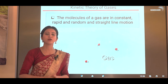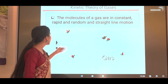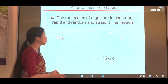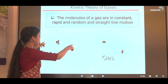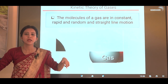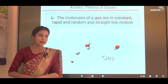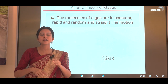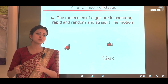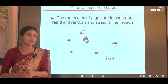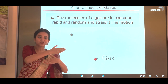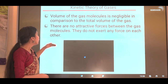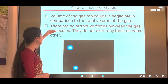The first postulate is: the molecules of a gas are in constant, random, and straight-line motion. As we can see in the diagram, we can consider this room as a container of a gas. We can imagine that these gas molecules are constantly moving from one place to another, and these motions are very random and very rapid, and they are in straight-line motion.